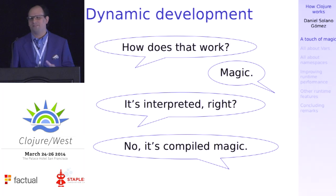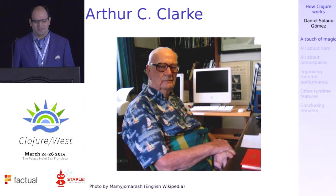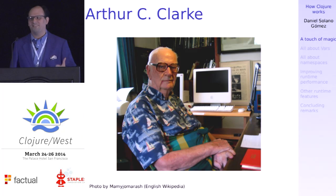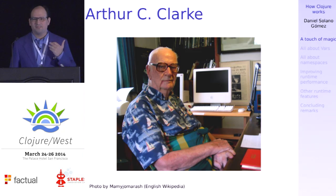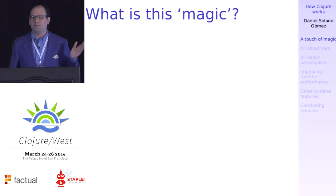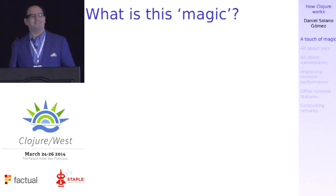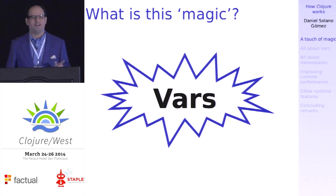At this point you might be saying, come on, get serious, it's not magic. Well, if you ask Arthur C. Clarke, he'll tell you that any sufficiently advanced technology is indistinguishable from magic. And I'm here to tell you that Clojure is just that good. But what is this technology? What makes this work? Any guesses? Mutable state — yes, it is. But in particular, it's VARs.